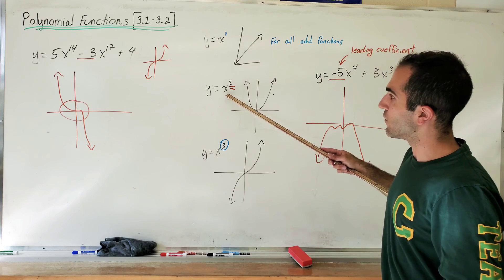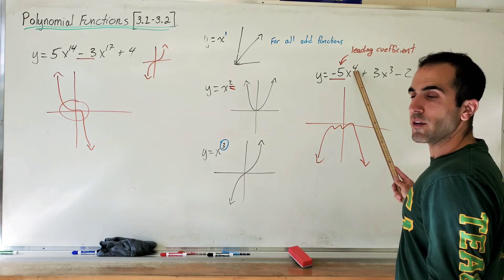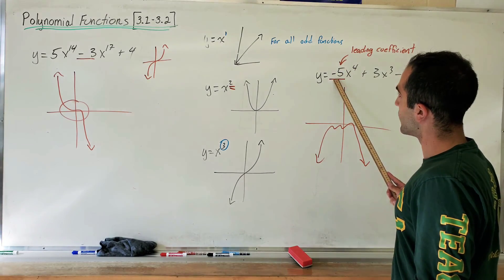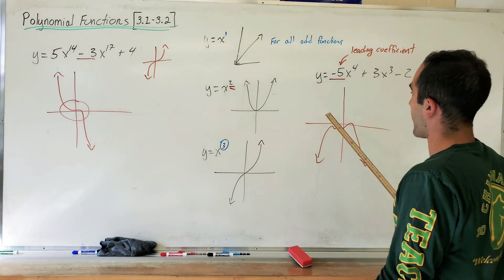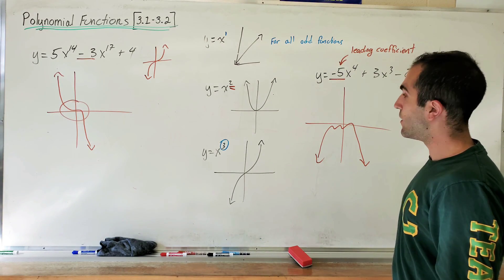Same thing with the even functions. Look for the highest power, 4, that's your even function. Look for the number in front. Oh, it's negative. So the parabola, it's not a parabola, but the parabola opens down. Okay, now you know your end behaviors.